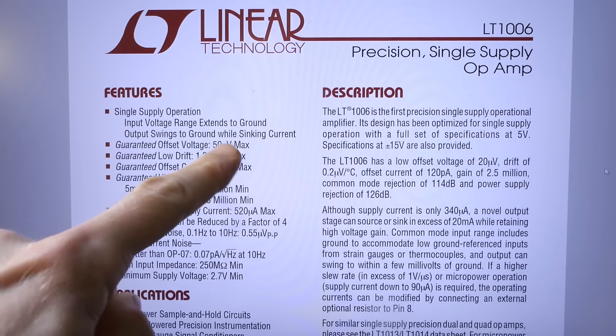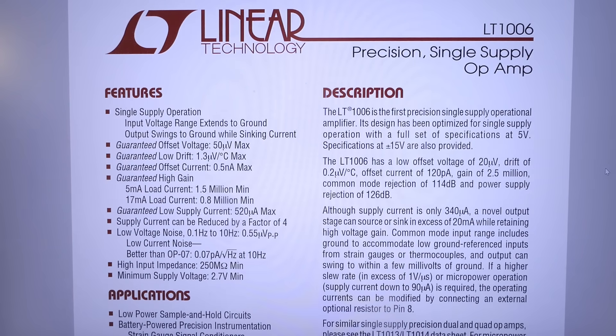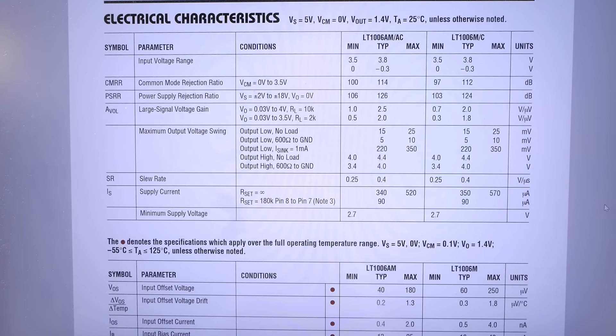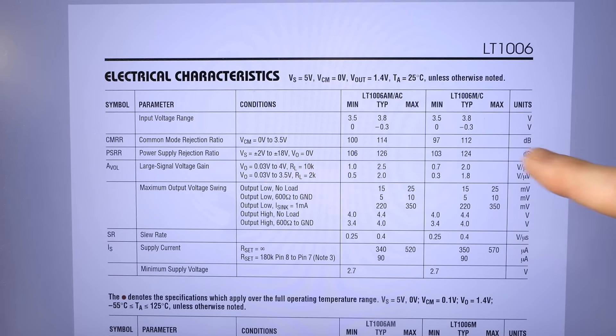This is the first one, super low offset optimized for single supply 5 volts. The input voltage offset is sort of unbelievable here. And the input voltage includes the negative rail. The inputs go from minus 0.3 all the way to 3.8 volts or at least from 0 to 3.5. And the output in low state 15 millivolts, in high state 4.4 volts.